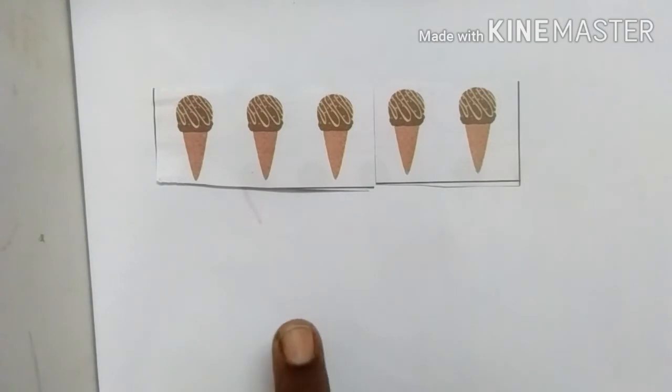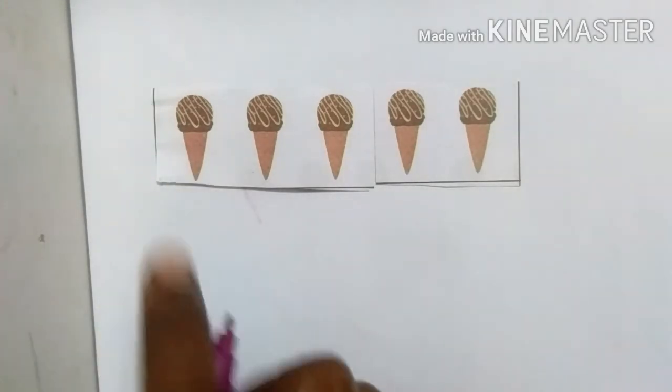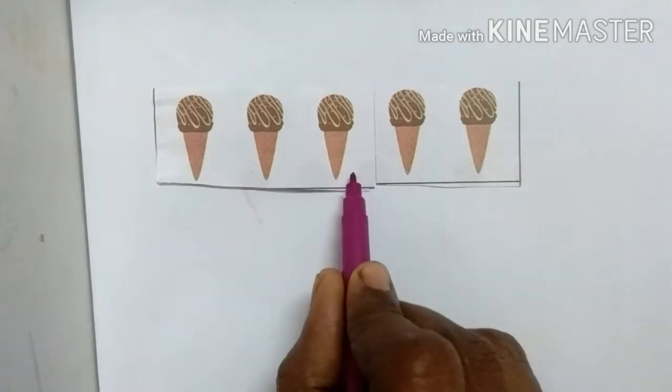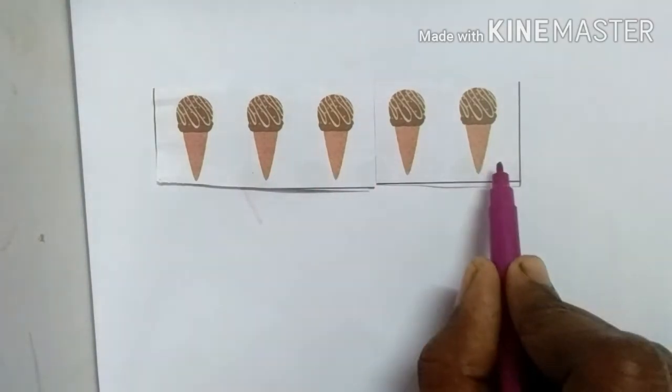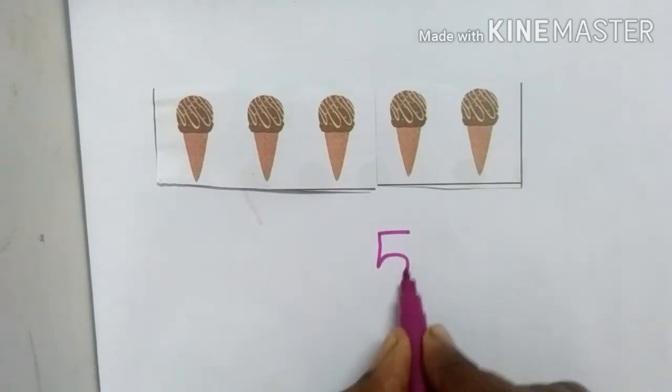What is this? This is ice cream. How many are there? Let's count. 1, 2, 3, 4, 5. Total 5 ice creams.